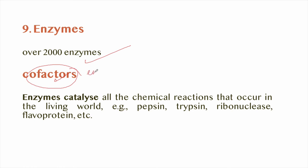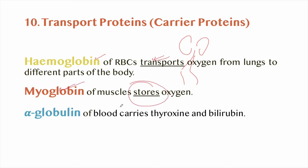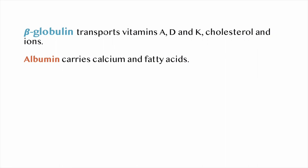Enzymes catalyze all chemical reactions that occur in the body — examples are pepsin, trypsin, ribonuclease, and flavoproteins. Transport proteins or carrier proteins: hemoglobin of RBCs transports oxygen from the lungs to different parts of the body, and myoglobin of muscles stores oxygen. Alpha globulin of blood carries thyroxin and bilirubin, and beta globulin transports vitamins A, D, K, cholesterol, and ions.